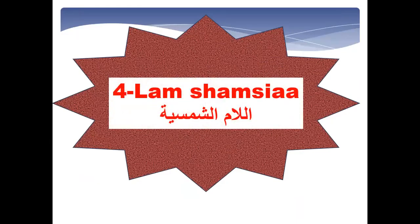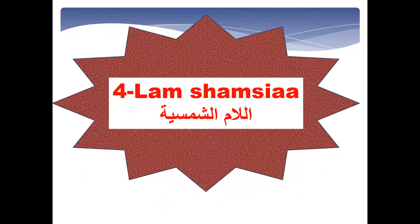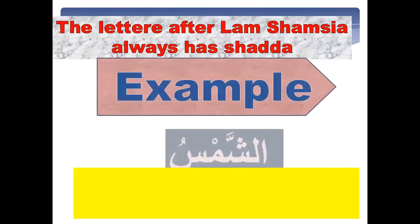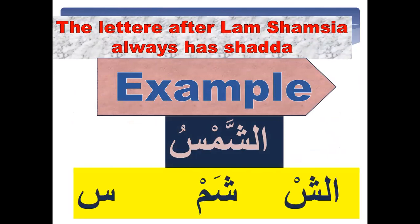The fourth type of letter is lam shamsiya — Al-lamu al-shamsiya. The letter after lam shamsiya always has a shadda. For example, 'al-shamsiya' — if you cut this word into syllables, it will be: ash-sham-si-ya — three syllables.